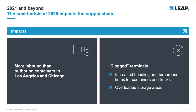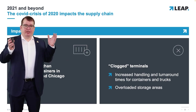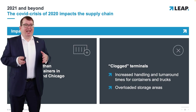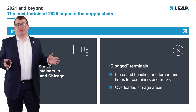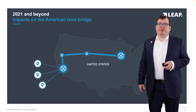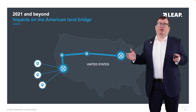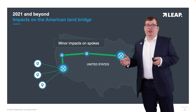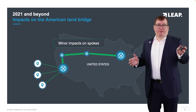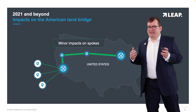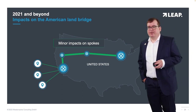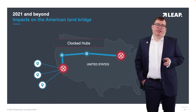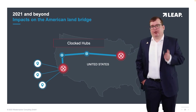What did this lead to? First, we had more inbound than outbound containers in both hubs — Los Angeles and Chicago — and this led to clogged terminals. There was an increased handling and turnaround time for containers and trucks, and we saw massively overloaded storage areas. Ultimately, we saw only minor impacts on the spokes; they were functioning fine with minor problems. But hubs became the bottleneck of the supply chain network.